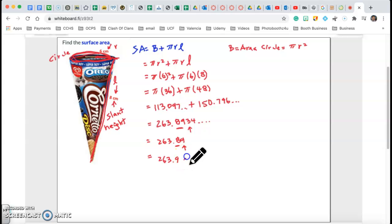My units are centimeters because this is surface area. Area is to the second power. So it's going to be centimeters to the second power. And that's it for a cone. Thank you very much.